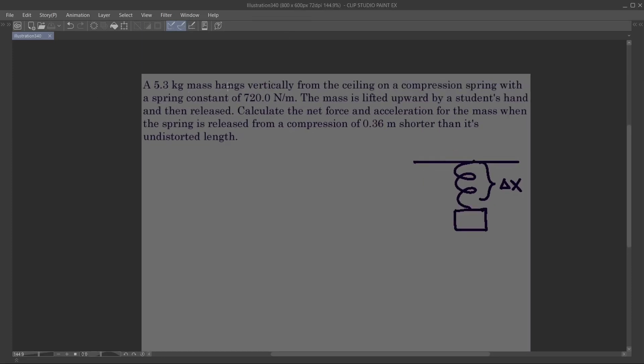A 5.3 kg mass hangs vertically from a ceiling on a compression spring with a spring constant of 720 N/m. The mass is lifted upwards by a student's hand and then released. Calculate the net force and acceleration for the mass when the spring is released from a compression of 0.36 m shorter than its undistorted length.